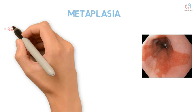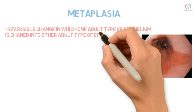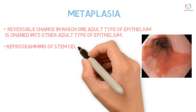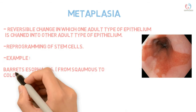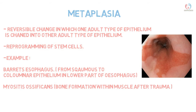Metaplasia is a reversible change in which one type of adult epithelium is replaced by another type, involving reprogramming of stem cells. An example is Barrett's esophagus, where the normal squamous epithelium is replaced by columnar epithelium in the lower one-third of the esophagus. On endoscopy, the velvety red discoloration represents columnar epithelium, while the pale areas represent normal squamous epithelium. Another type of metaplasia is myositis ossificans, in which bone formation occurs after traumatic muscle injury.